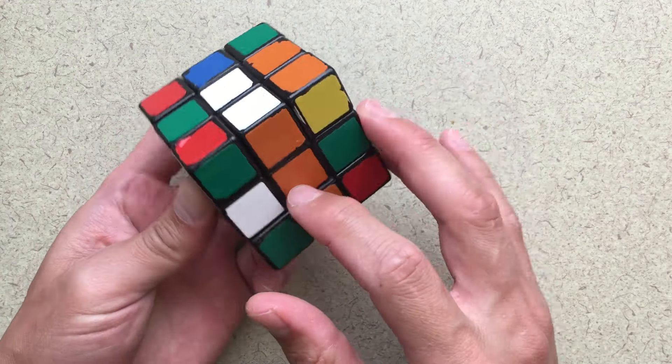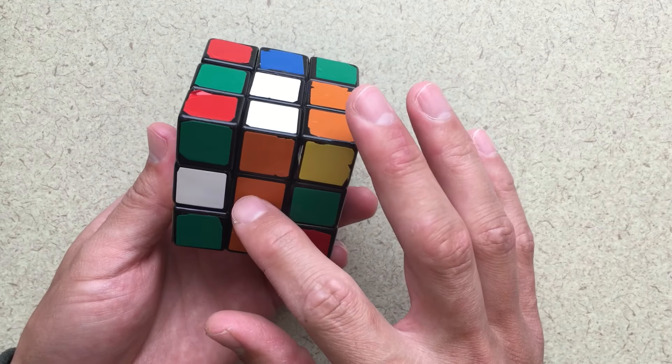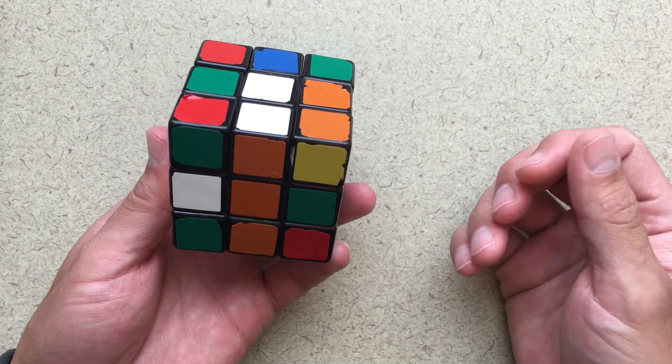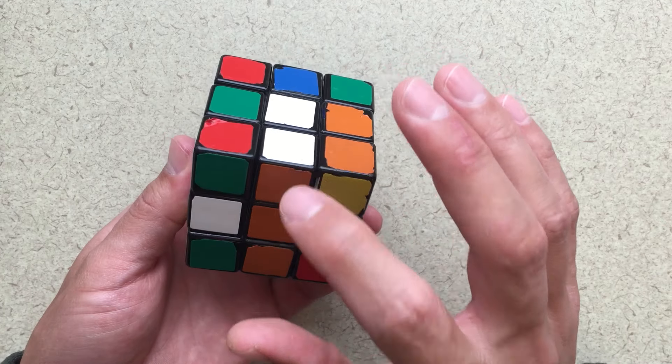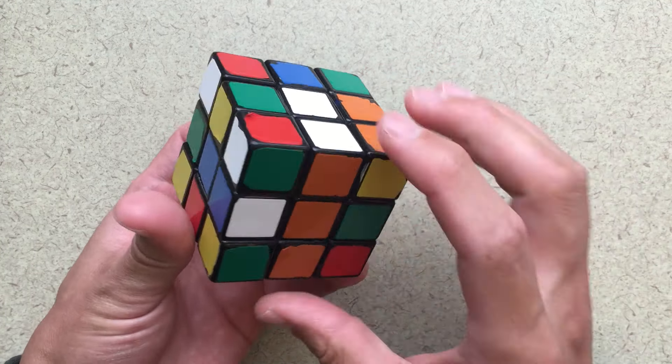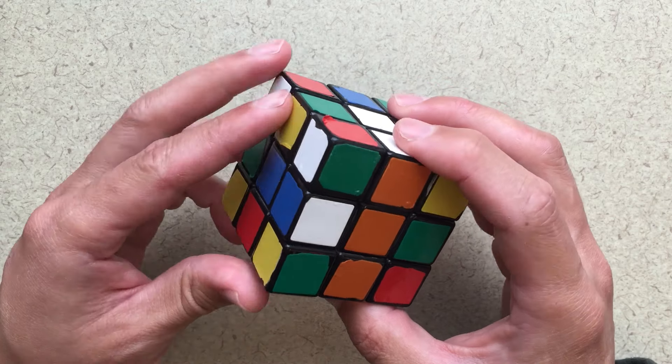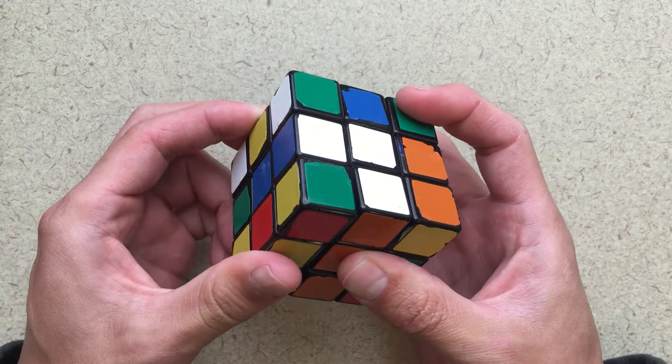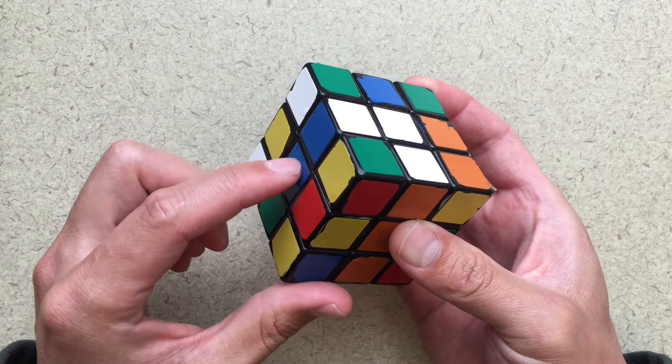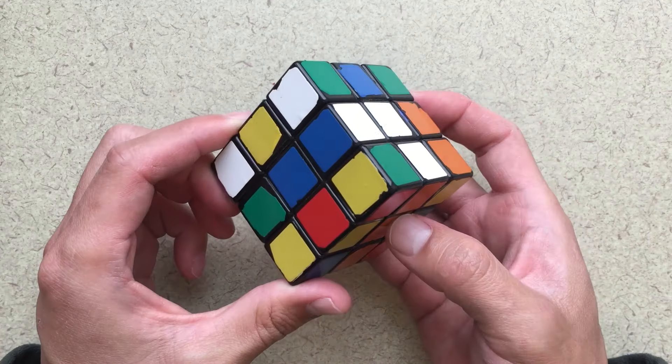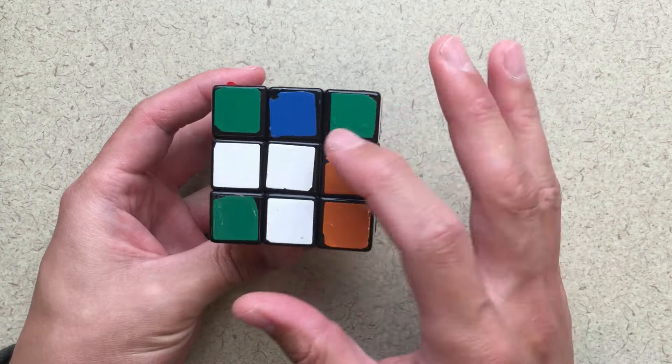So this piece right here, it will have to be in this position when we actually end up solving the Rubik's Cube. So we'll have white here and orange here. So this piece, that's where it belongs. So now I can see this piece here, I've got white and blue. If I turn this face, that's going to put that piece in the correct spot, essentially, for my cross.